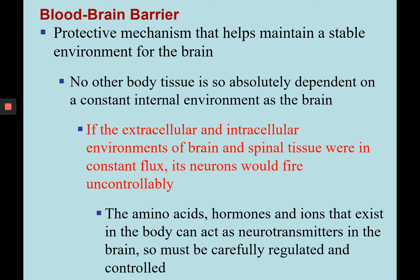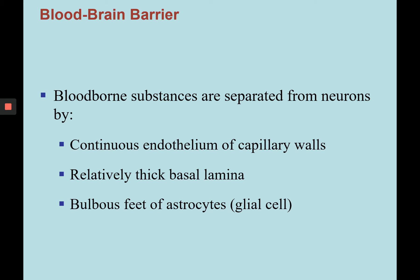The blood-brain barrier is protective and helps maintain a stable environment for the brain, separating the central nervous system from the rest of the body. Certain amino acids, hormones, and ions in the body may act as neurotransmitters in the brain and cause neurons to fire, so we need to regulate what gets past the blood-brain barrier. There are three parts: the continuous endothelium of capillary walls found around the brain, the relatively thick basal lamina between the continuous endothelium, and the bulbous feet of astrocytes — the glial cells that help make up part of the blood-brain barrier.